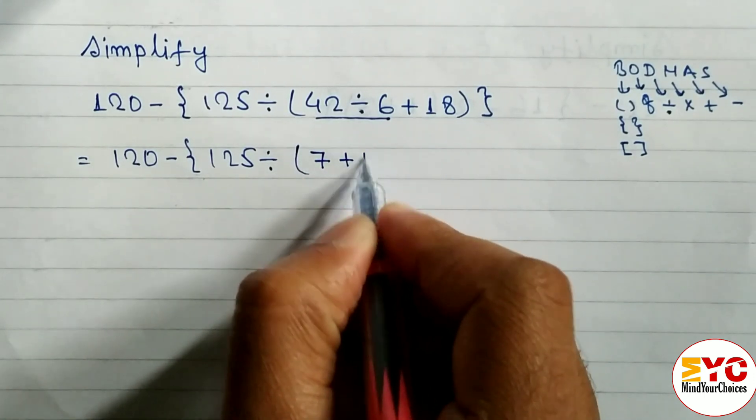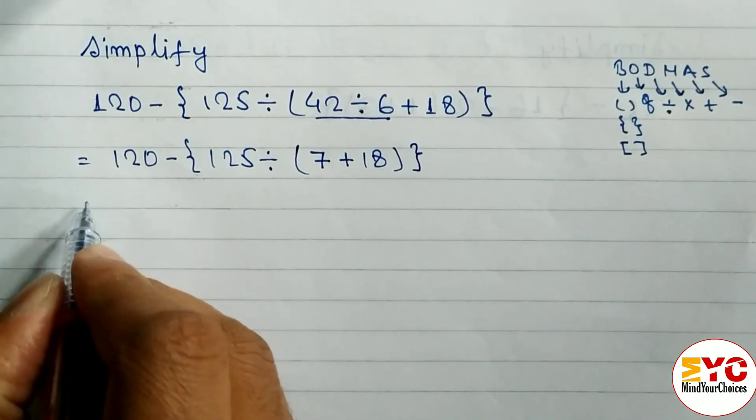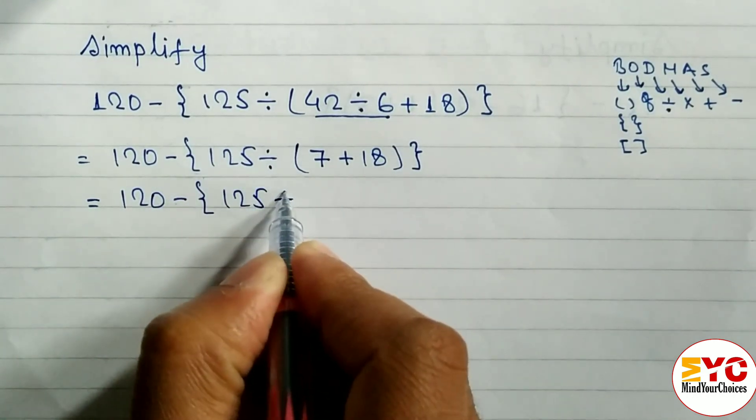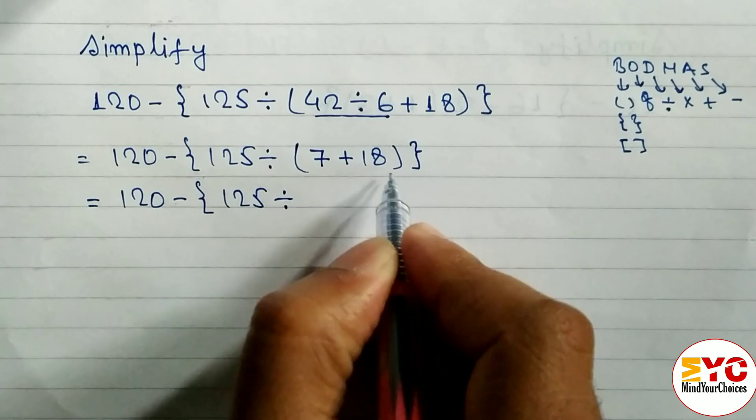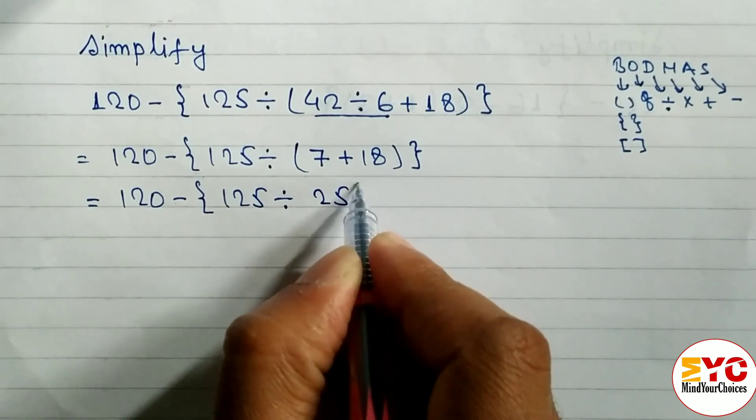So 120 minus, curly bracket, 125 divided by - now we have to add: 18 plus 7, we get 25. So write 25, close curly bracket.